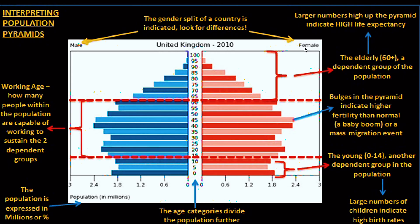Larger numbers high up the pyramid indicate high life expectancy. If people are found in those upper age brackets, it means these people have high life expectancy — they will live very long before they die.